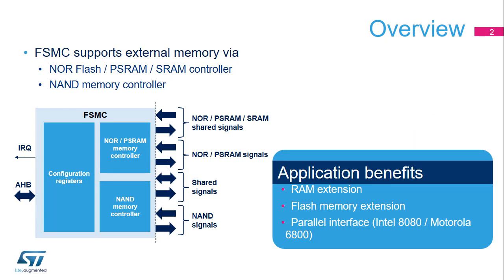The FSMC controller integrated in STM32L5 products provides external memory support through two memory controllers: the NOR Flash PSRAM and SRAM controller, and the NAND memory controller. This enables the CPU to communicate with external memories including NOR and NAND Flash memories, PSRAM and SRAM. This interface is fully configurable, allowing easy connection with external memories or other parallel interfaces.